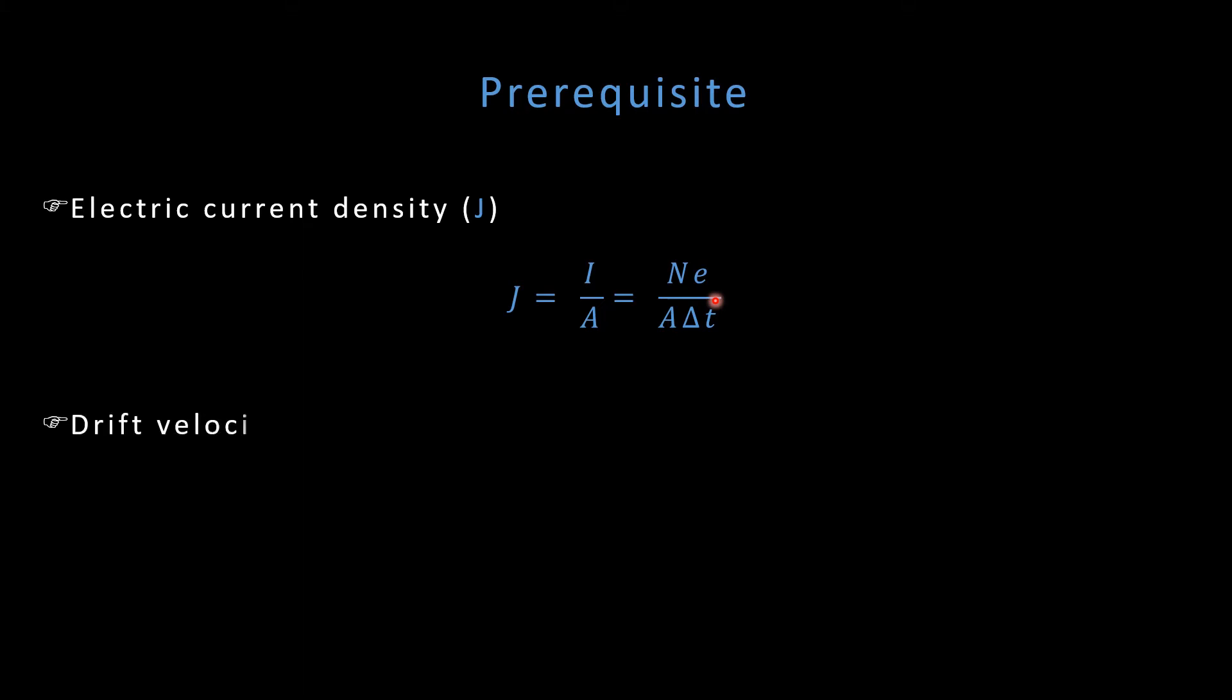Secondly we should be knowing the expression for drift velocity. Drift velocity can be given as eE by Me into tau. What is Me? Mass of electron. E is the electric field applied and tau is relaxation time.